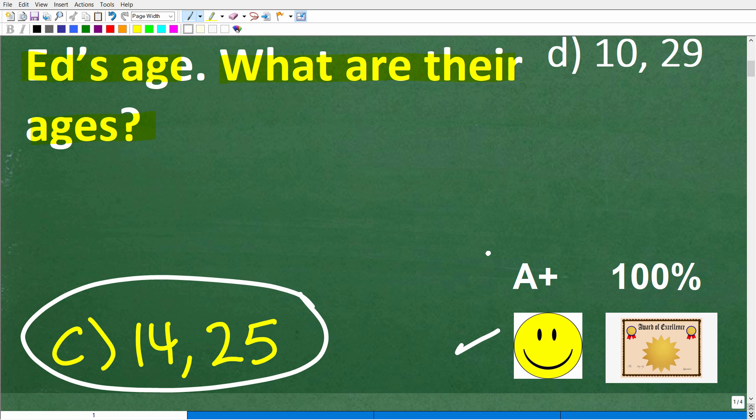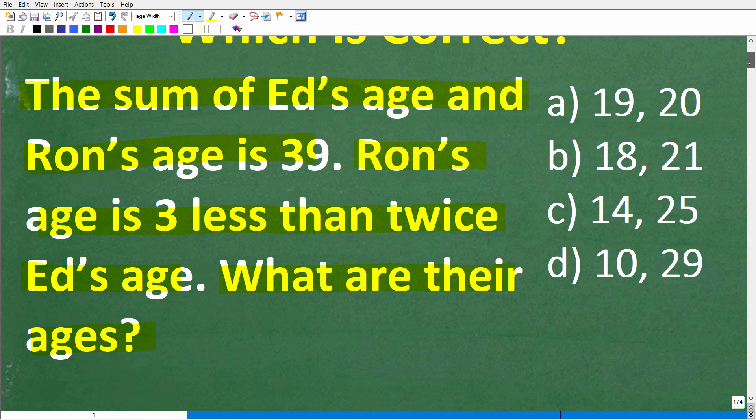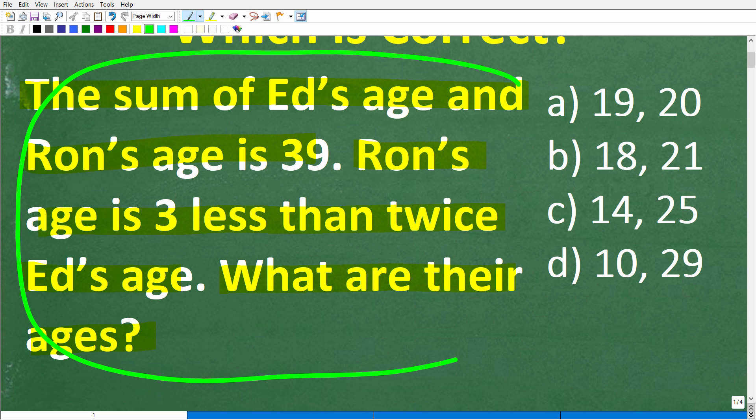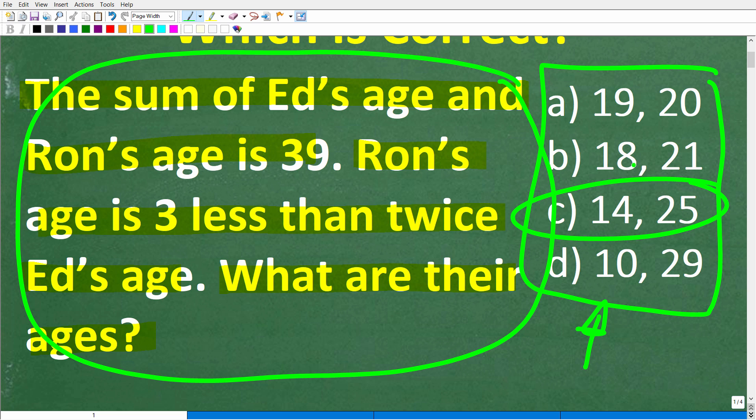Now, if you got this right, you definitely get a happy face, an A plus, a 100% and a certificate of excellence for being able to figure out the solution to an age math word problem. Very typical type of math word problem, especially in algebra. But because we have a multiple choice question here, you could have used the answers to figure this thing out. But if we didn't have a multiple choice question, well, we need to know the algebra. So let's go ahead and get into this right now. This is not that difficult.